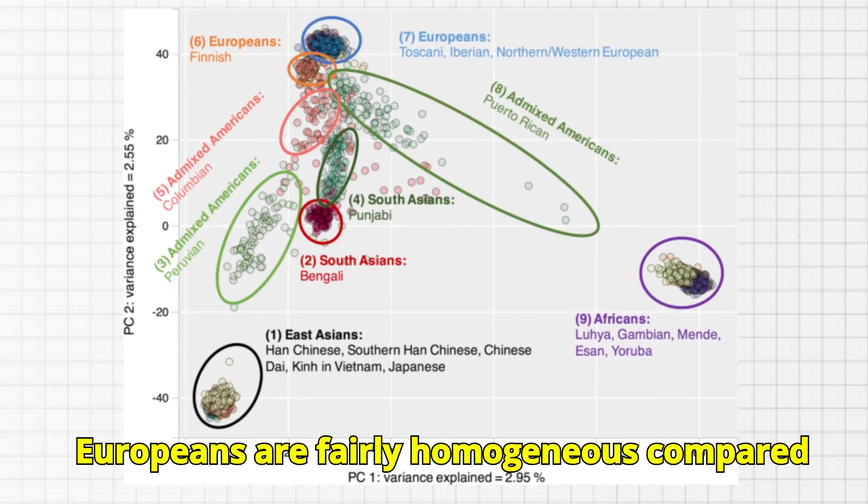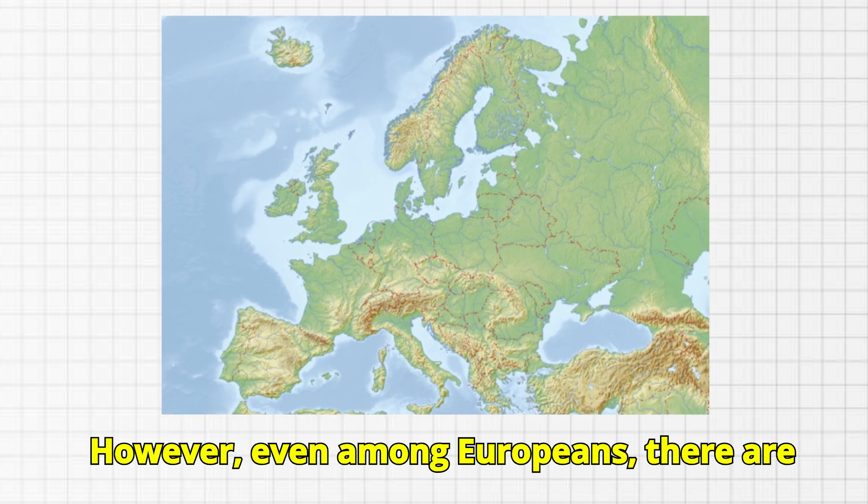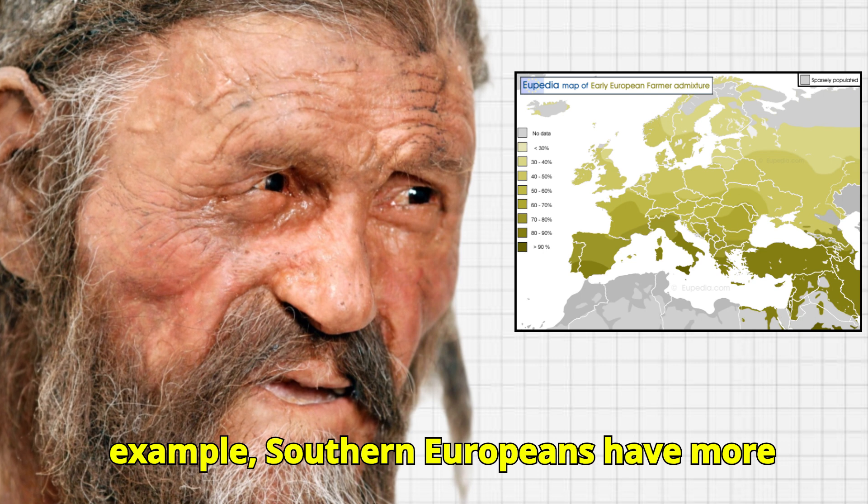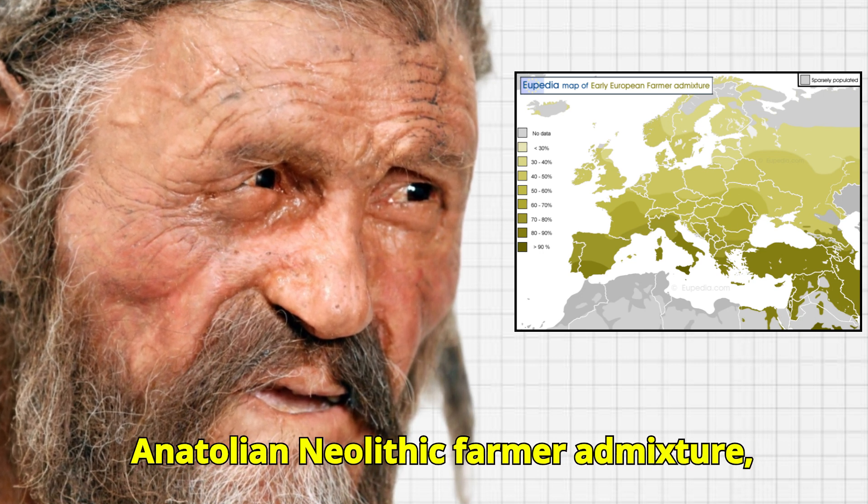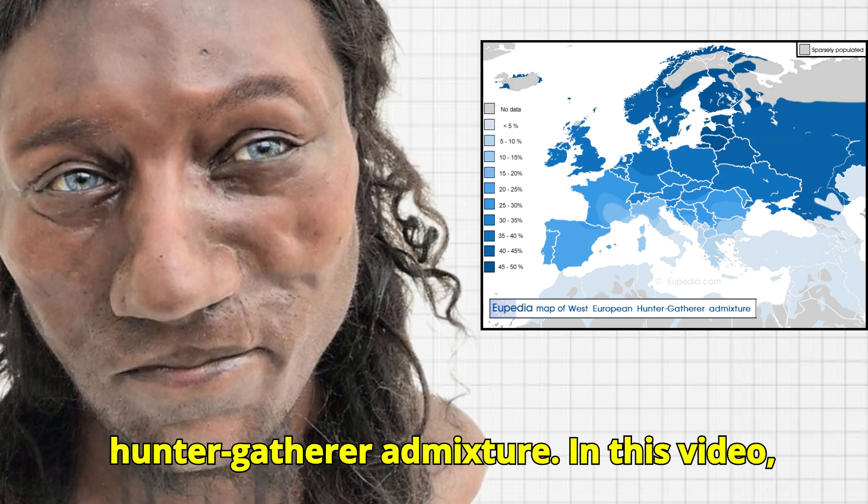Europeans are fairly homogenous compared to the rest of the world's population. However, even among Europeans, there are regional genetic differences. For example, Southern Europeans have more Anatolian Neolithic farmer admixture, whereas Northern Europeans have more hunter-gatherer admixture.